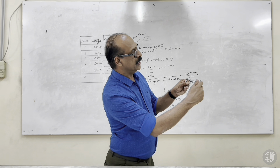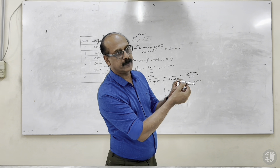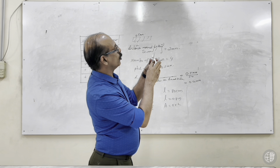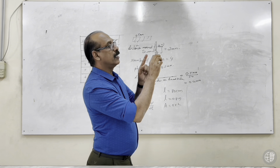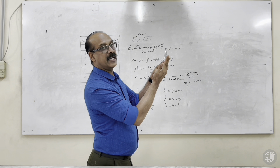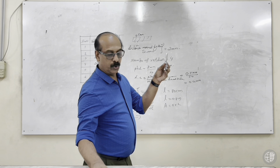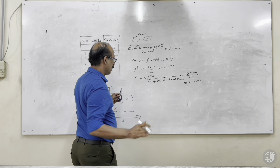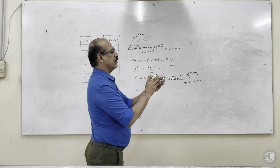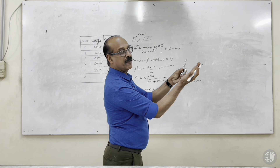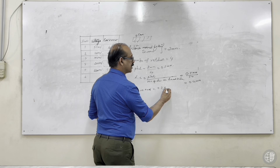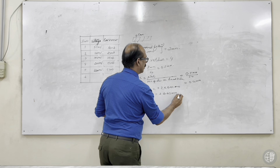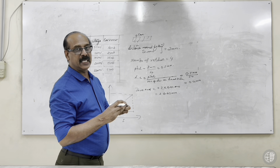Hold the screw gauge upward like a pistol and look at the baseline. If zero is on the right side, it is a positive zero error. Here zero on the head scale is two divisions to the right of the baseline, so we mark it as plus two. Multiplied by the least count of 0.01 millimeters, the zero error is plus 0.02 millimeters.